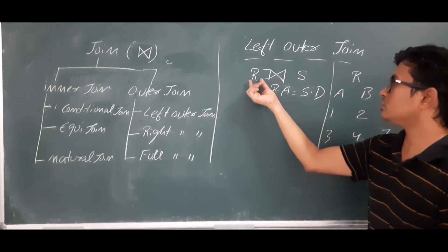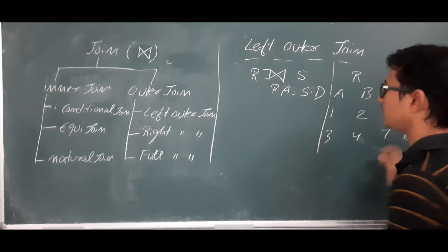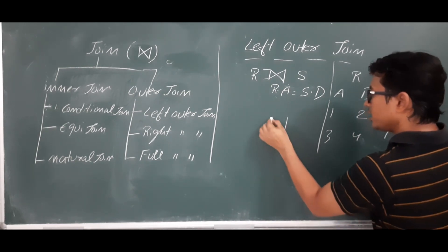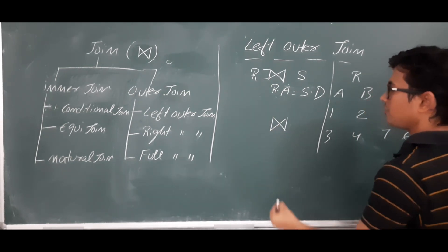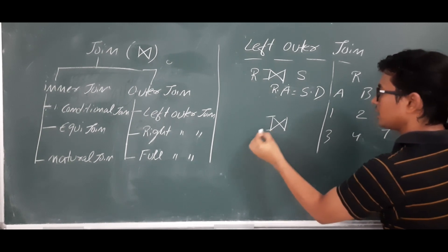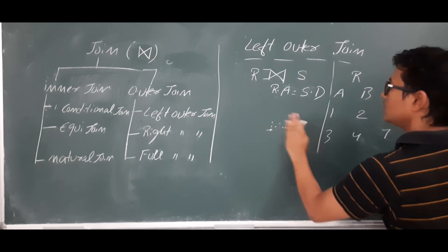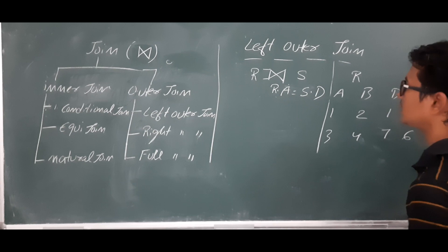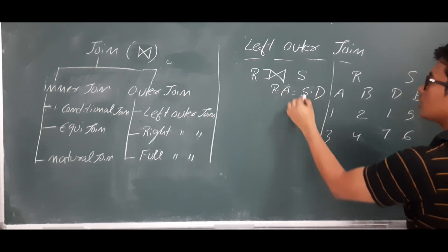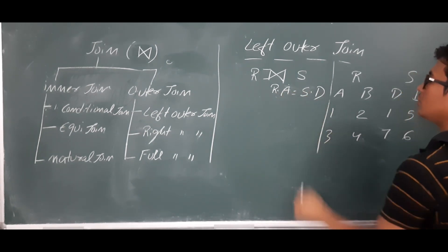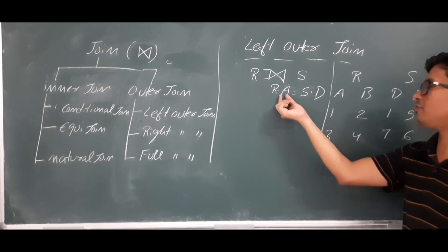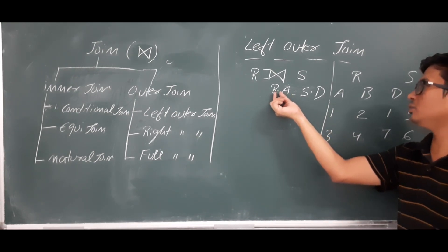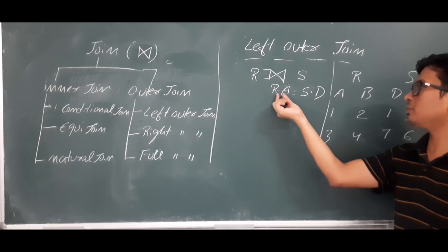Left outer join is usually represented with the join operator symbol placed to the left-hand side. So left outer join is represented with the condition r.a = s.b, meaning you are applying the left outer join between two relations with attribute A belonging to relation R and attribute D belonging to relation S.